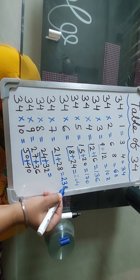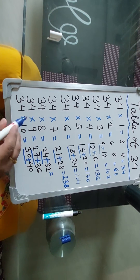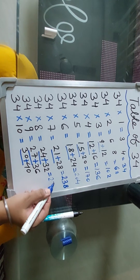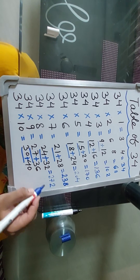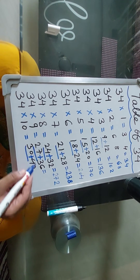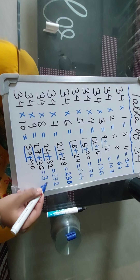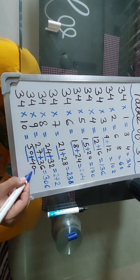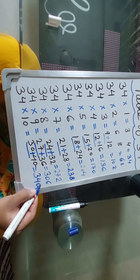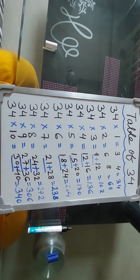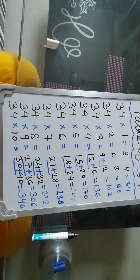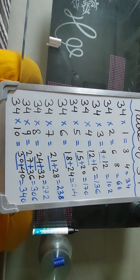34 eights are 24 plus 3, 27 and 2 — it becomes 272. 34 nines are 27 plus 3, 30 — it becomes 306. 34 tens are 30 plus 4, 34 and 0 — it becomes 340. This is the table of 34. Thanks for watching — please like, share, and subscribe to my channel.